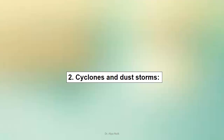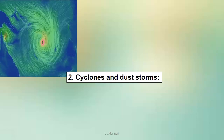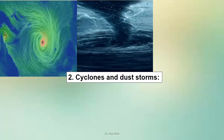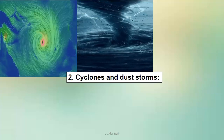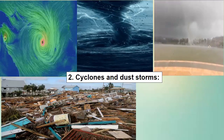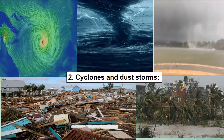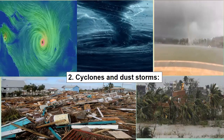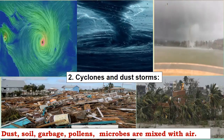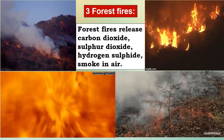Another reason is cyclones and dust storms. Whenever there is a low-pressure belt created in that zone, especially in coastal areas of countries like India, cyclones bring huge devastation. You can see the destruction — even plants are uprooted. Because of this, dust, soil, garbage, pollens and microbes all get mixed with the air. One more reason is forest fires.